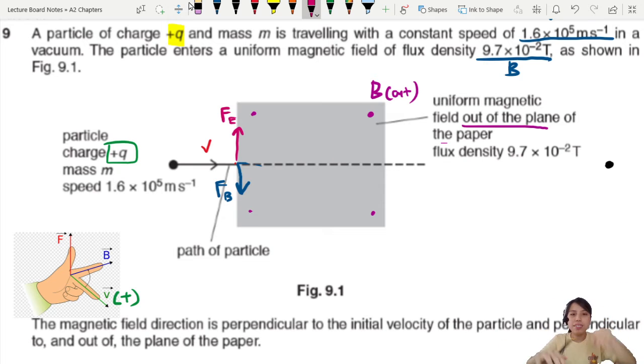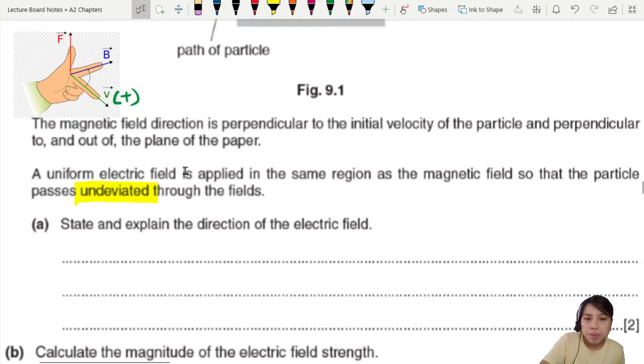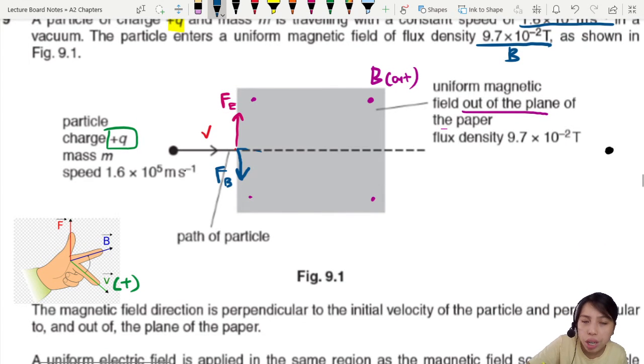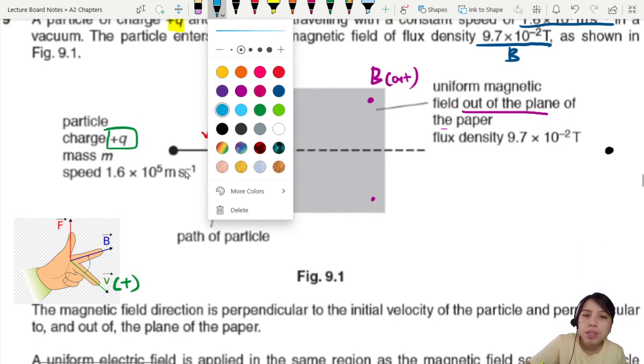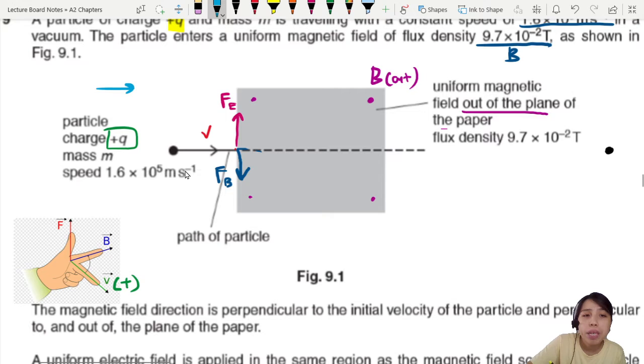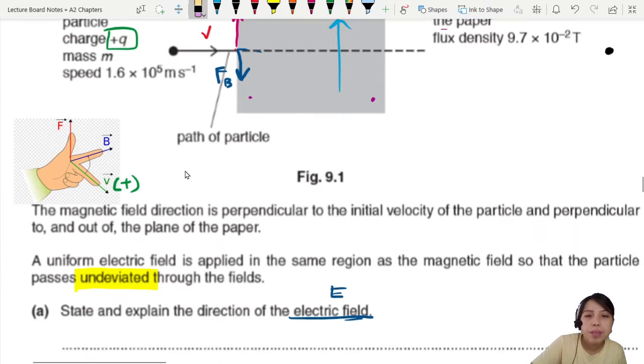So if there's only a magnetic field, the particle should go curved out. But it didn't, it stayed in a straight line. Means there's another force countering it. So there is an electric force pointing upwards. This will be your electric force. So that way the particle will not go up or down but nice and balanced.